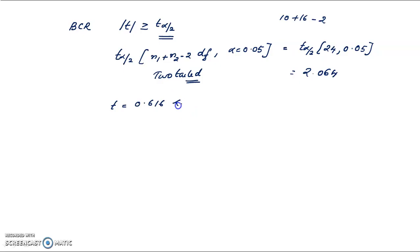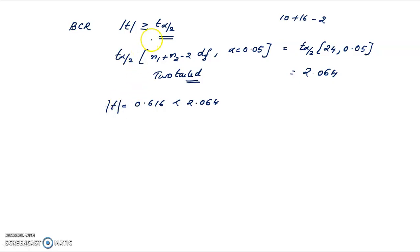The table value is 2.064. The calculated value of t is 0.616, which is less than the table value 2.064. Since modulus of t calculated is not greater than 2.064, it does not fall in the critical region.